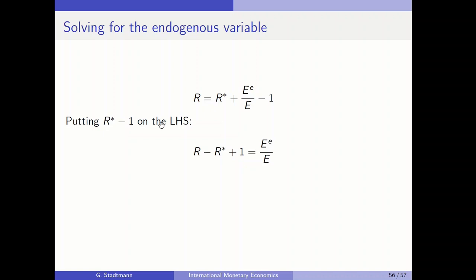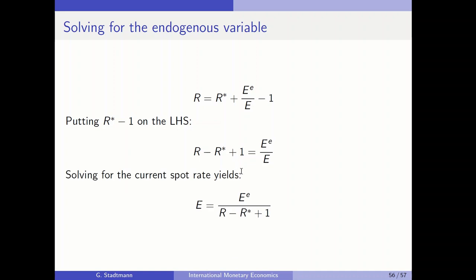Starting the multiplier computation: we put R* and −1 on the left-hand side of the equation. R* appears with a negative sign and 1 with a positive sign. Then we isolate E on the left-hand side by dividing by (R − R* + 1), so the exchange rate equals the expected exchange rate divided by the interest rate differential plus one.